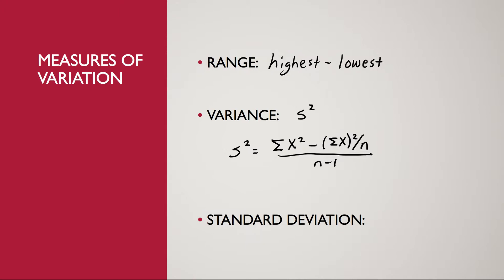For standard deviation, the symbol we use is just S. In order to calculate standard deviation, we are simply going to take the square root of the variance. Calculating the range and standard deviation should be fairly easy, but the real work in terms of working out a problem is going to be here with the variance.